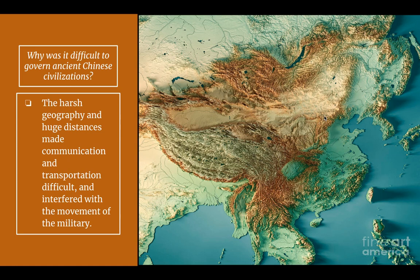Why was it difficult to govern ancient Chinese civilizations as they started to rise up — as more villages popped up, turning into cities and civilizations? The same geography that made isolation possible also made governing difficult. The harsh geography and huge distances across China made communication and transportation difficult, and it also interfered with the movement of the military. Communicating from one side of China to the other, or transporting goods for the military, would have made it difficult to govern and lead an empire in this land.